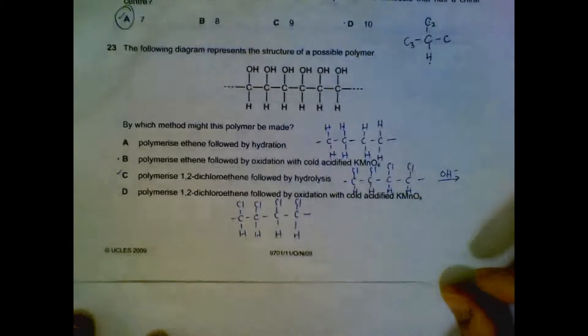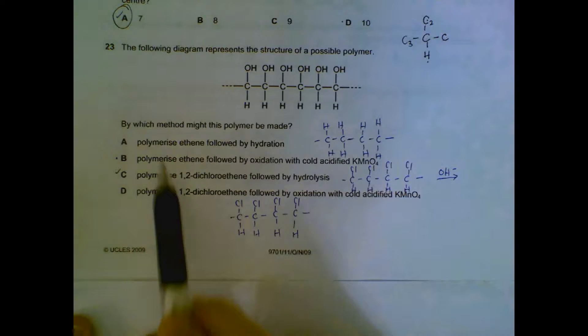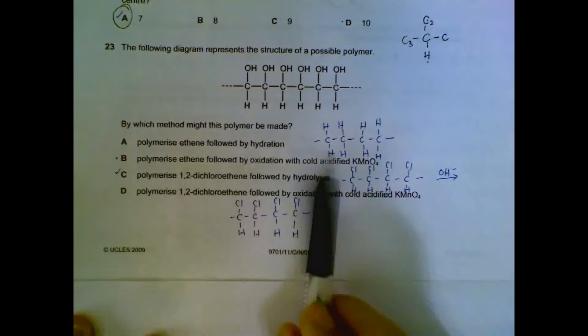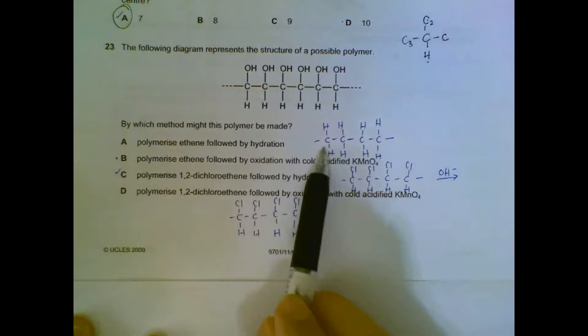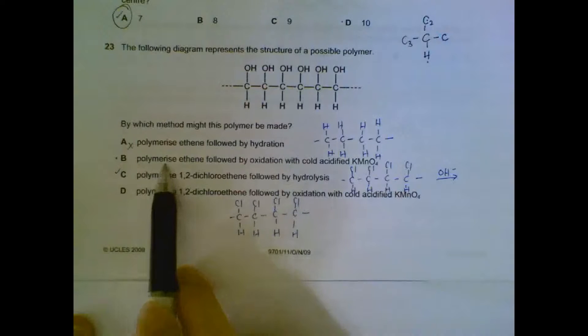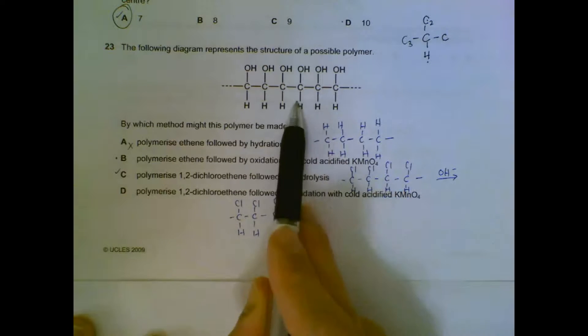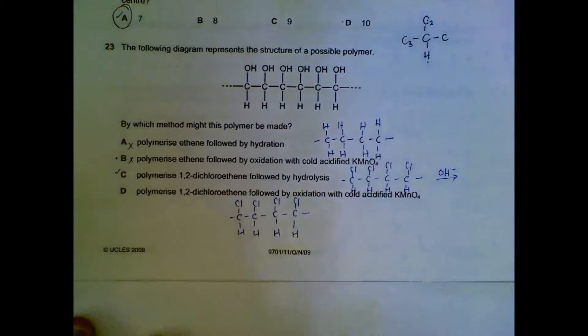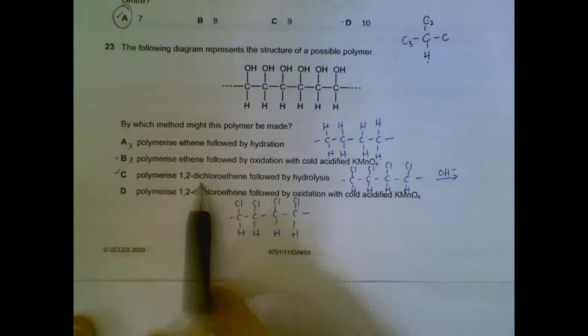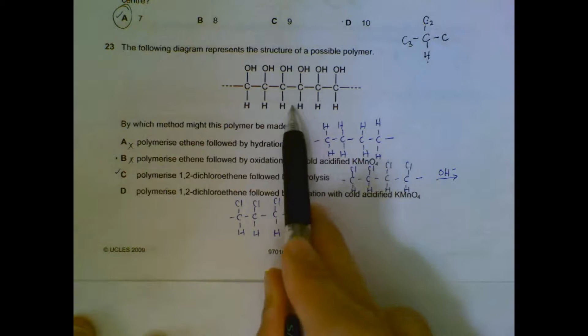Number 23. We have a polymer. How can we make this polymer? Looking at the wrong options. A: Polymerize ethene then hydrate it. If we polymerize ethene, we will get this structure, and hydration will not change it to the structure that we want. So A is out. B: Polymerize ethene followed by oxidation. It's the same thing. We get polyethene which will not become this structure. C is the answer. We polymerize 1,2-dichloroethene. We will get this structure. Followed by hydrolysis, your Cl will be replaced by OH. And then we get the one we have on top.